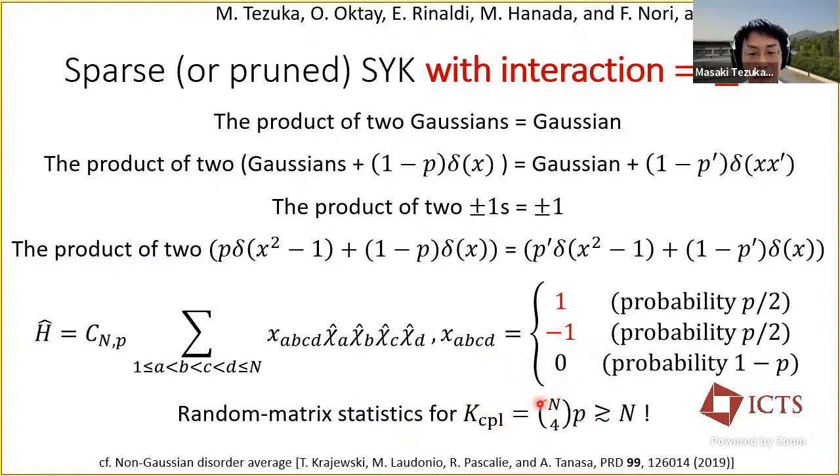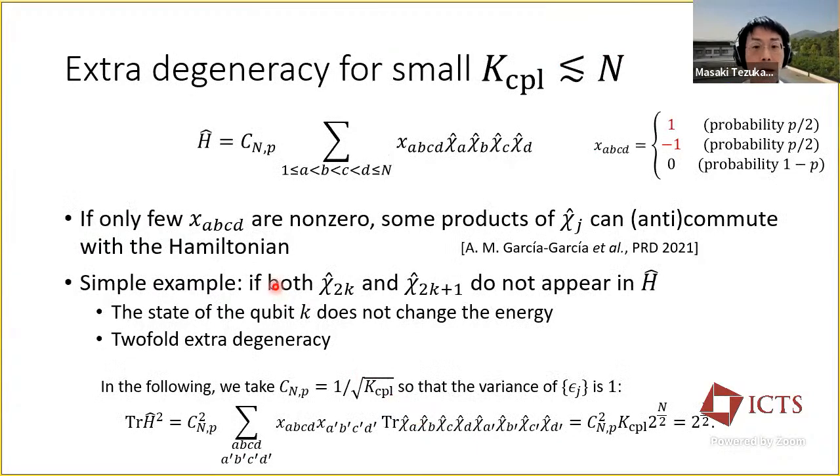I note that the effect of taking a non-Gaussian distribution of the coupling in dense SYK has also been studied. Maybe we have too few couplings. As I said, we find that there are emergent conserved quantities. That is, some operator products commute or anti-commute with the Hamiltonian, which was already known for Gaussian sparse SYK. An almost trivial example is that if two Majorana fermions in the system actually do not appear in the Hamiltonian at all, then we can combine them to form a qubit, whose state does not change the energy. So there will be a two-fold extra degeneracy. By the way, for the binary model, by taking the overall scaling constant to be 1 over square root of number of couplings, we can set the variance of the eigenvalues to unity, which we do in the following.